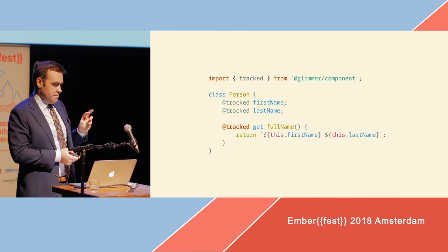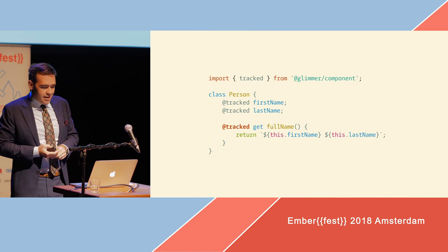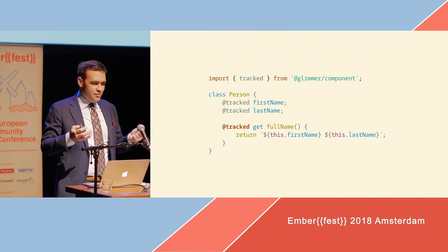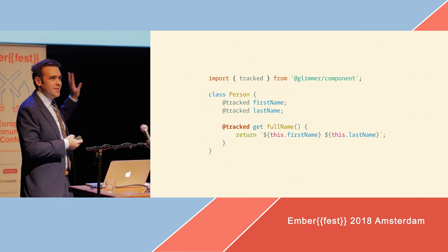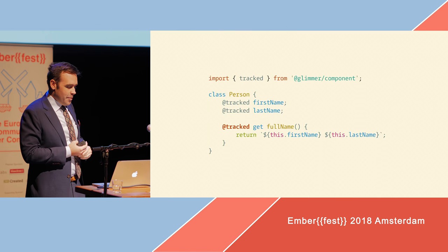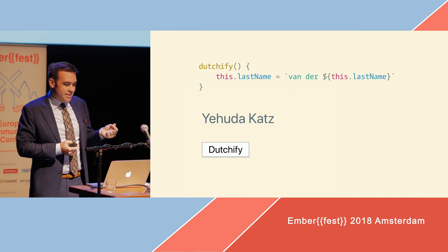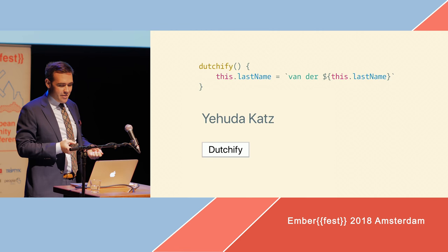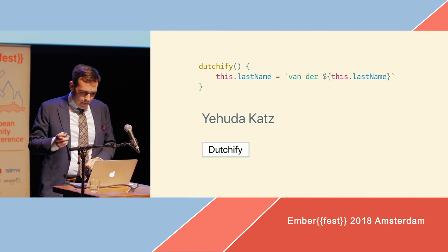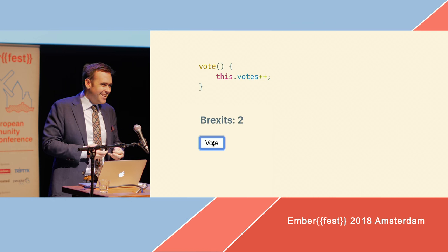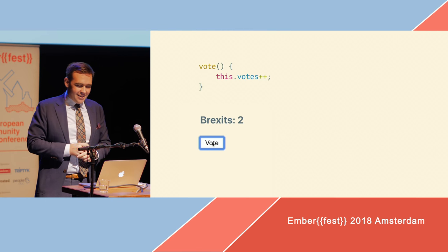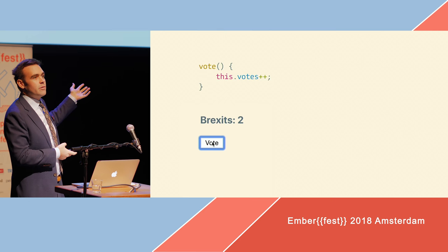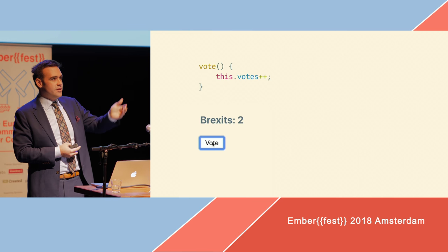Maybe this doesn't seem like that big of an improvement if you already know the syntax. But it goes deeper than just syntax. First, it means we can get rid of the requirement to use this.set for property changes — you can just write normal JavaScript. It also means that tracked properties work with any language feature, now or in the future. For example, you can use ++ to increment an integer — that just works with tracked properties. It wouldn't work if you had to call set or setState or any method to introduce a change into the component.